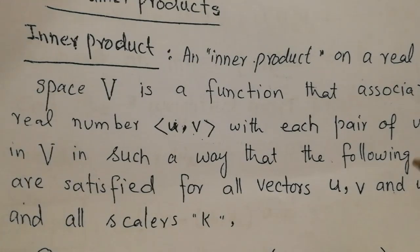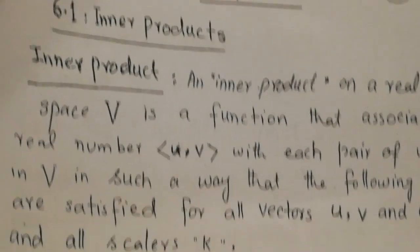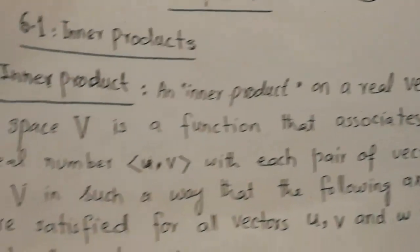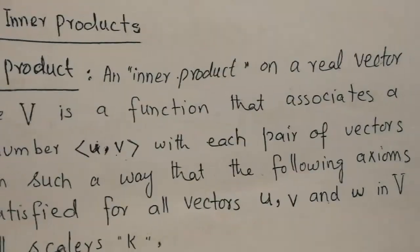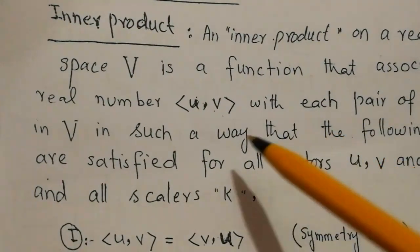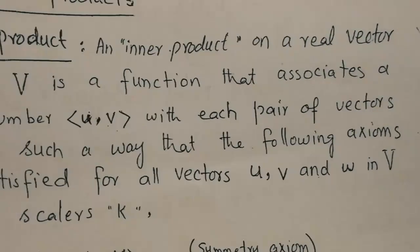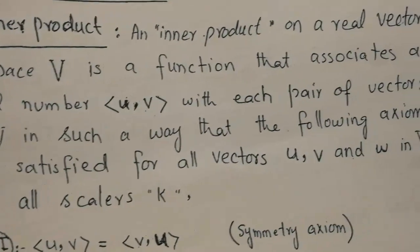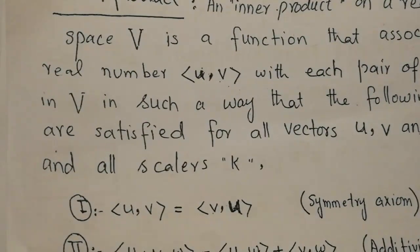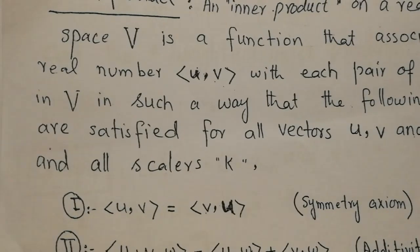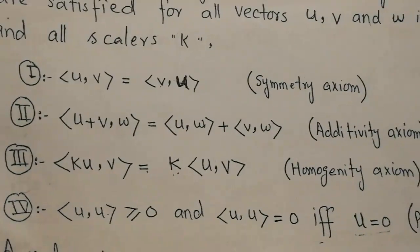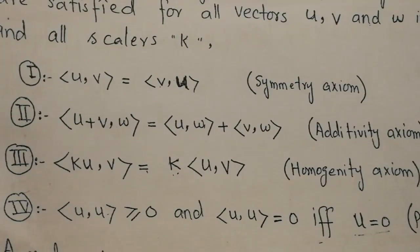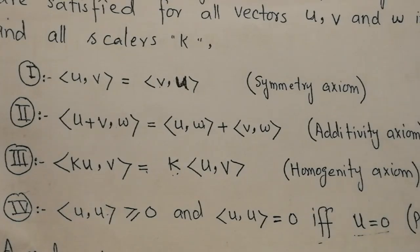An inner product on a real vector space V is actually a function that associates a real number with each pair of vectors in V, in such a way that the following axioms are satisfied for all vectors U, V, and W in V and all scalars. If a particular type of product satisfies these four axioms, then we say that product is an inner product on a real vector space.